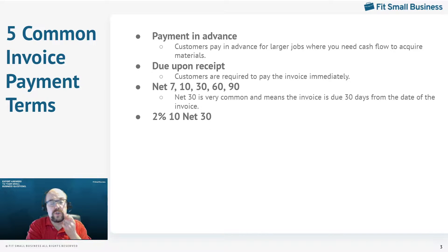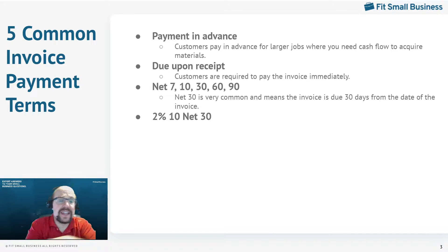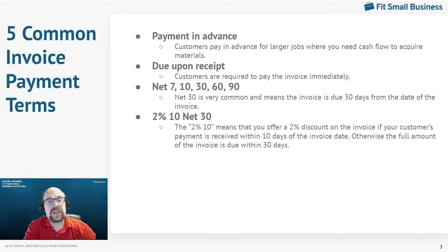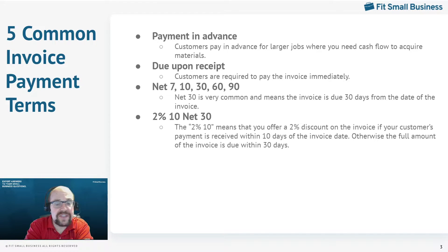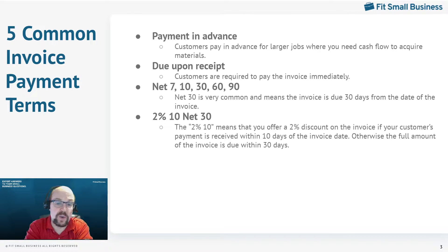Another payment term is something like 2/10 net 30. This means the customer can take 2% off of the invoice if they pay within 10 days; otherwise, the entire amount is due within 30 days. You can have any combination of this — for example, 1% 10 net 30 or 1% 20 net 30. This is the way you would typically format that.